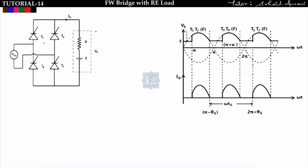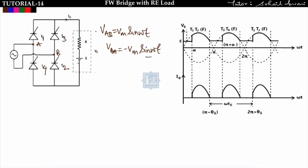This is the single-phase full-wave controlled bridge rectifier with RE load. We have thyristors T1, T2, T3, and T4. The input voltage: point A and point B, so input voltage vab = Vm·sin(ωt), shown as the dotted line in the waveform. And vba = −Vm·sin(ωt). An RE type of load is connected.